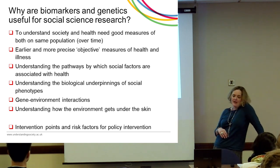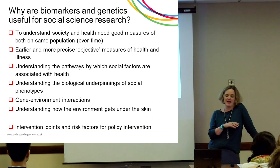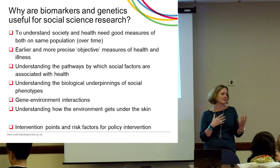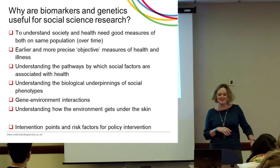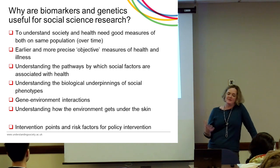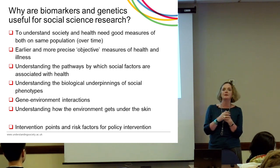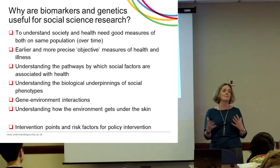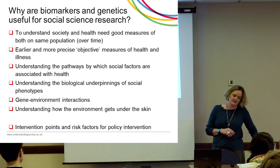By looking at the genetic side of the data, you can think about whether there are biological underpinnings to things we think of as social. There's also gene-environment interaction — it may not be that genetics affect something directly, but they interact with something else. For example, there's a gene-environment interaction for pollution and lung function, where some people are more susceptible to lung function problems when they're in polluted situations.